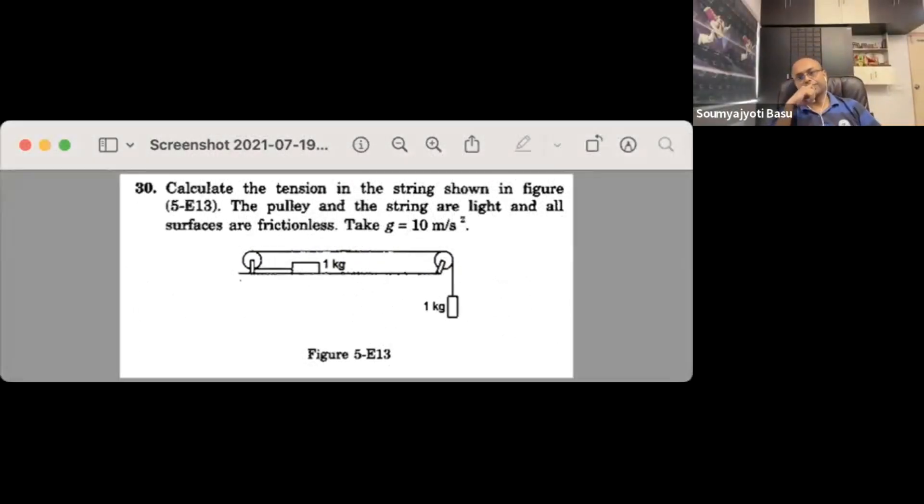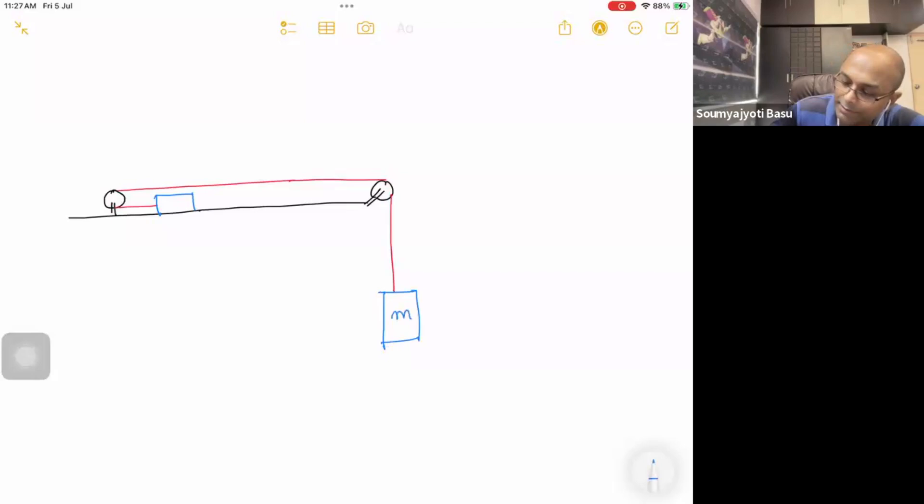It would be a mass m equals 1 kg. We'll draw the diagram with respect to ground. This is the ground and the table top.